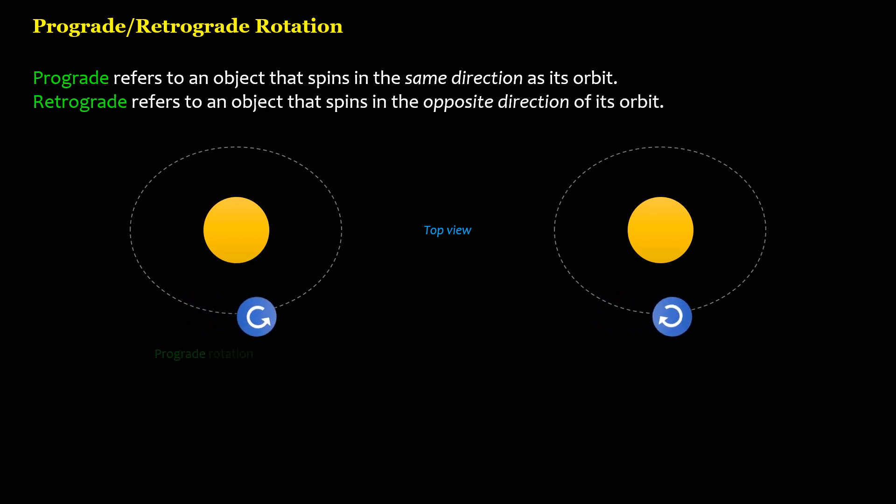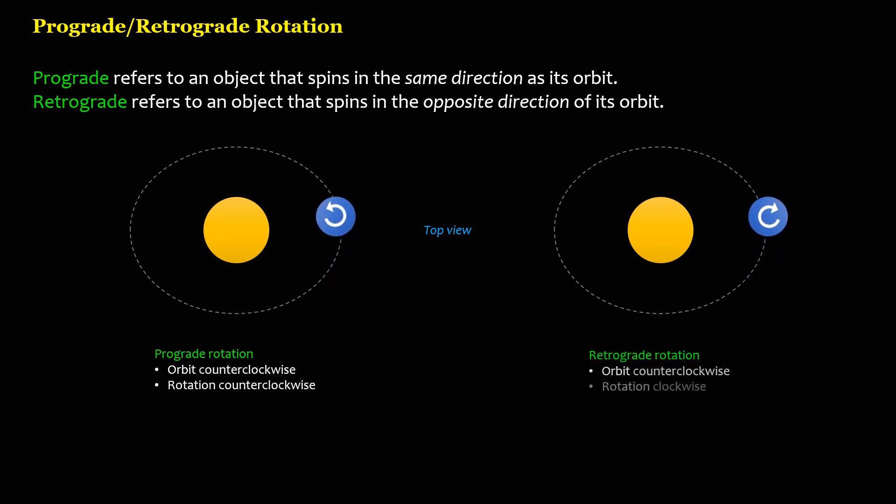Prograde rotation: orbit counterclockwise, rotation counterclockwise. Retrograde rotation: orbit counterclockwise, rotation clockwise.